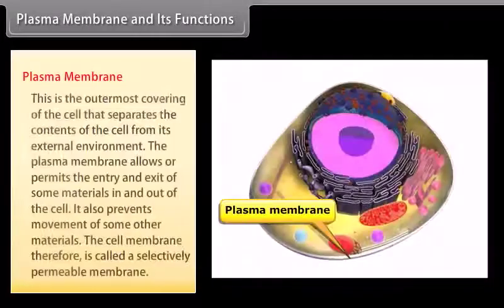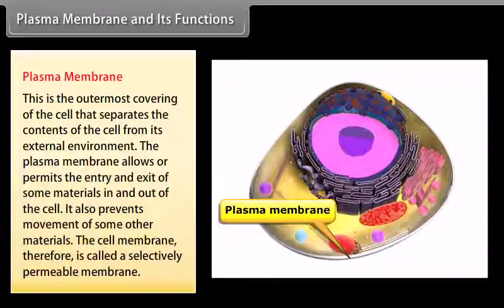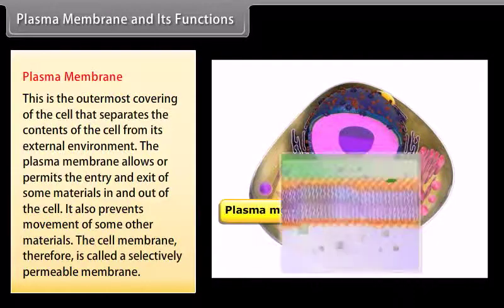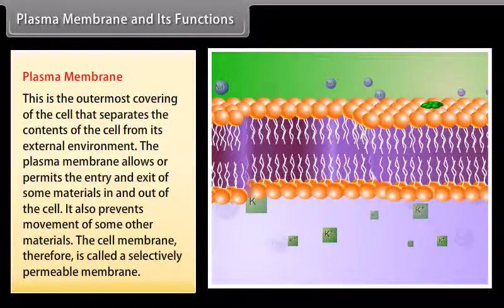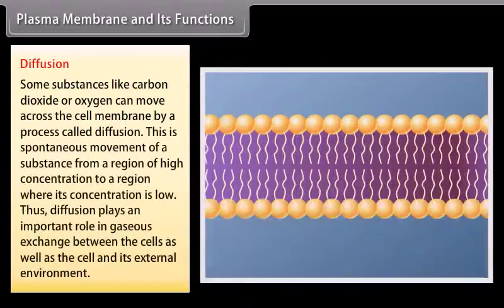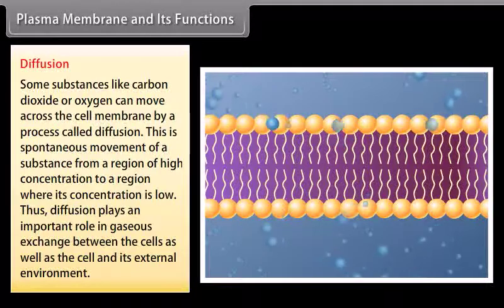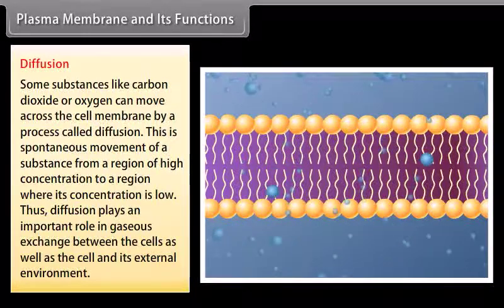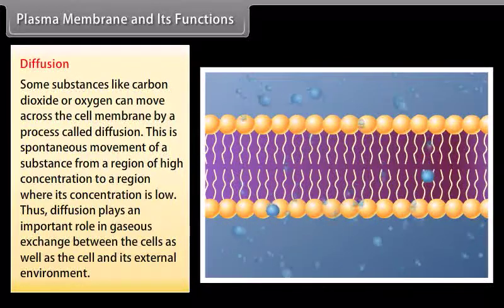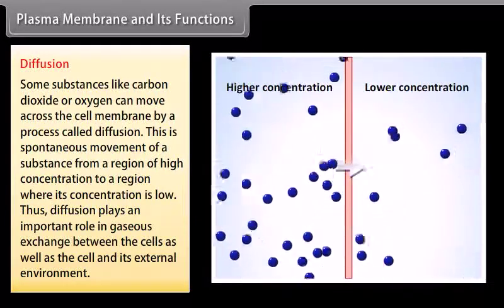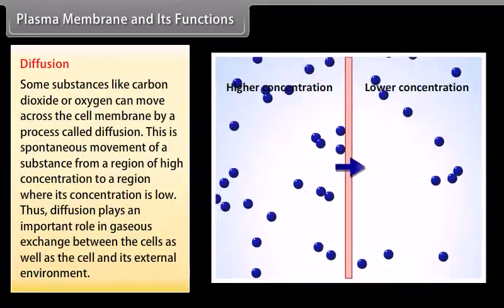Plasma membrane is the outermost covering of the cell that separates the contents of the cell from its external environment. The plasma membrane allows or permits the entry or exit of some materials in and out of the cell, and also prevents movement of some other materials. Therefore, the cell membrane is called a selectively permeable membrane. Some substances like carbon dioxide or oxygen can move across the cell membrane by a process called diffusion — the spontaneous movement of a substance from a region of high concentration to a region of low concentration. Diffusion plays an important role in gaseous exchange between cells and their external environment.